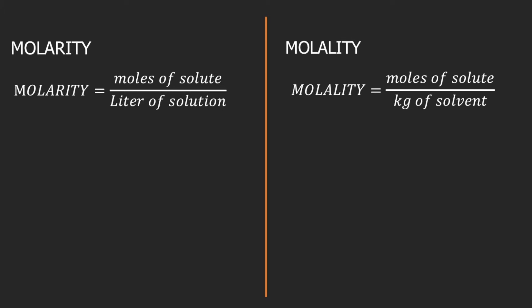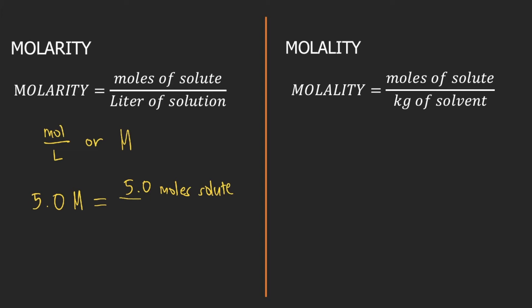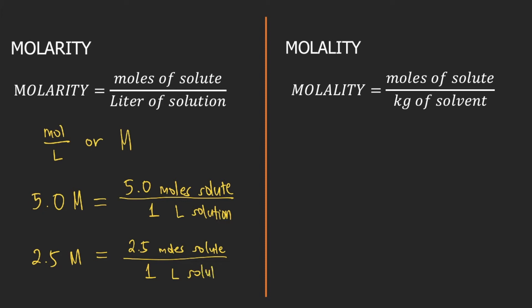If you can recall, molarity is moles of solute divided by liters of solution. So the unit for molarity is moles per liter, also known as molar or capital M. For example, if you are given 5.0 molar, this is equivalent to 5.0 moles of solute per one liter of solution. And if you are given 2.5 molar, that is 2.5 moles of solute per one liter of solution.